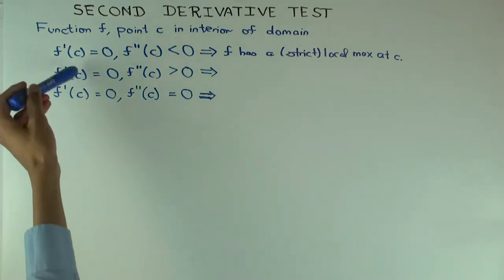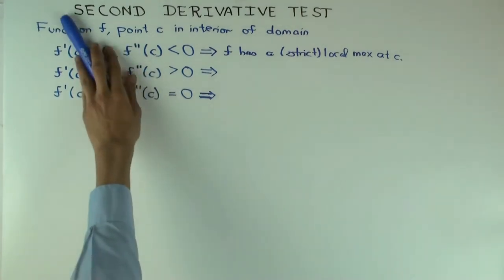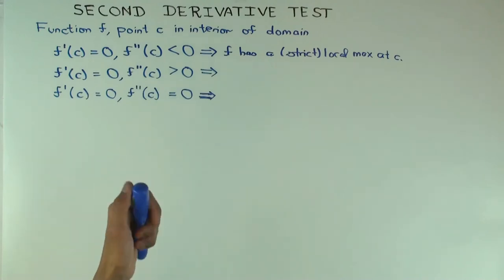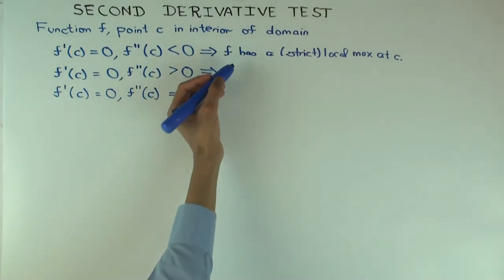So, remember, this happens only when f prime c equals 0. So, you cannot just directly compute the second derivative and say whether maximum. The first derivative has to equal 0. Only then you get these conclusions.